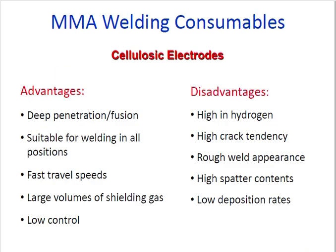MMA cellulosic electrode advantages: deep penetration fusion, suitable for welding in all positions, fast travel speed, large volume of shielding gas. Disadvantages: high hydrogen content, high crack tendency due to hydrogen, rough weld appearance, and high spatter. Deposition efficiency is low at around 75–90%.